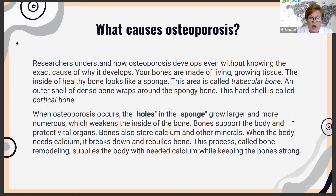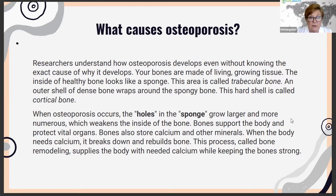So what causes osteoporosis? We do understand how osteoporosis develops, but we don't always know why it develops. The bones are living, growing tissue, and healthy bone looks like a sponge. The inner area is called trabecular bone, whereas the outer shell is the denser cortical bone that wraps the trabecular bone. When osteoporosis occurs, you get holes in the trabecular bone — the sponge's holes get larger and more numerous — and this weakens the internal structure of the bone. The bones store calcium, and when we need calcium, we can draw it from the bone, breaking it down and then rebuilding the bone in the process.